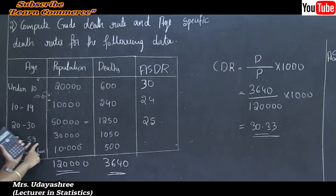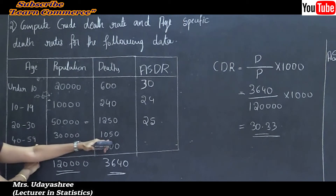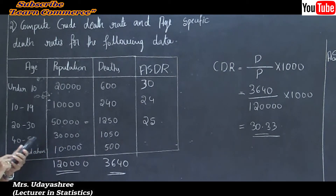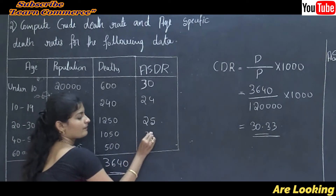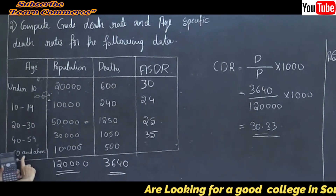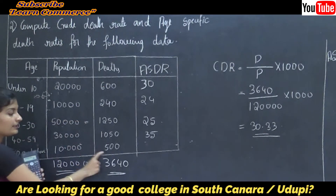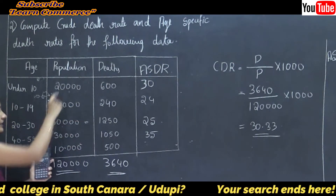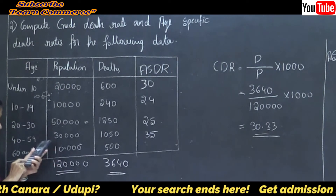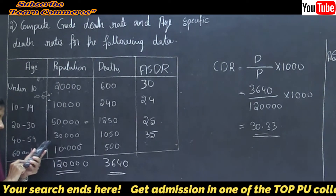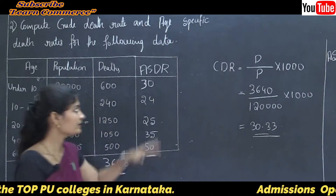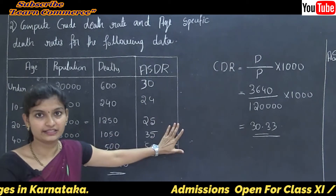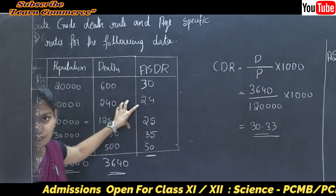For age group 60 and above, number of deaths are 500 divided by total population 10,000 into 1000, that is 50. These are the age-specific death rates of the given information.